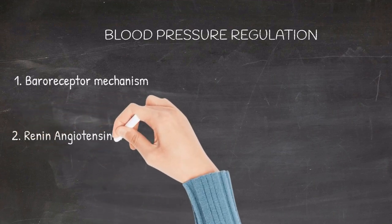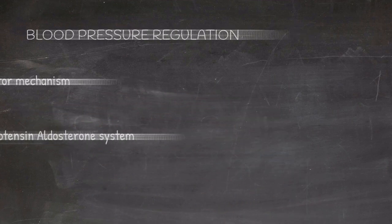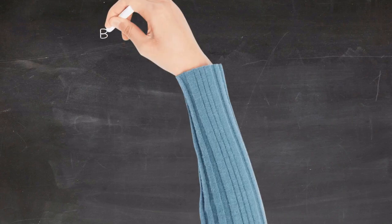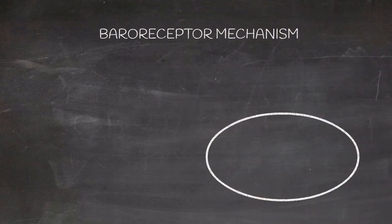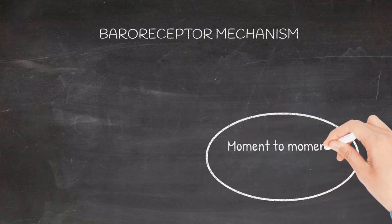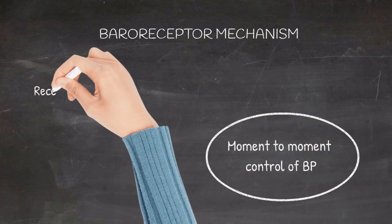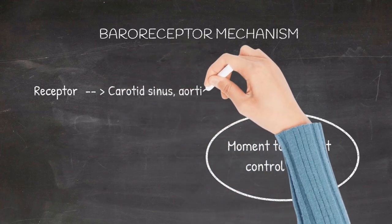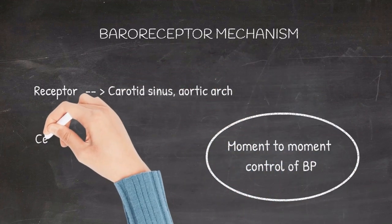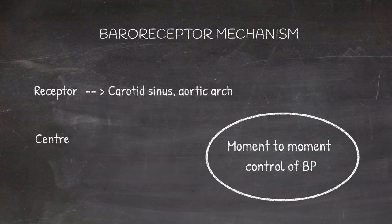Let's firstly look into the baroreceptor mechanism. This mechanism is responsible for moment-to-moment control of the blood pressure. The receptor is located in the carotid sinus and the aortic arch, and the center, which is the vasomotor center, is located in the medulla.